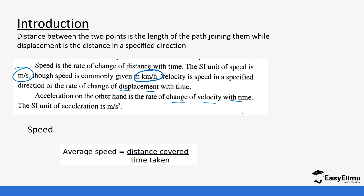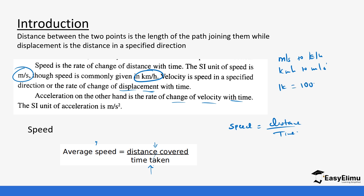To calculate average speed, we know that speed equals distance over time. To calculate average speed, add all the distances covered and all the time taken, then do the division. Remember to convert between meters per second and kilometers per hour. One kilometer equals 1000 meters, and one hour equals 3600 seconds. We'll use these conversions in our calculations.